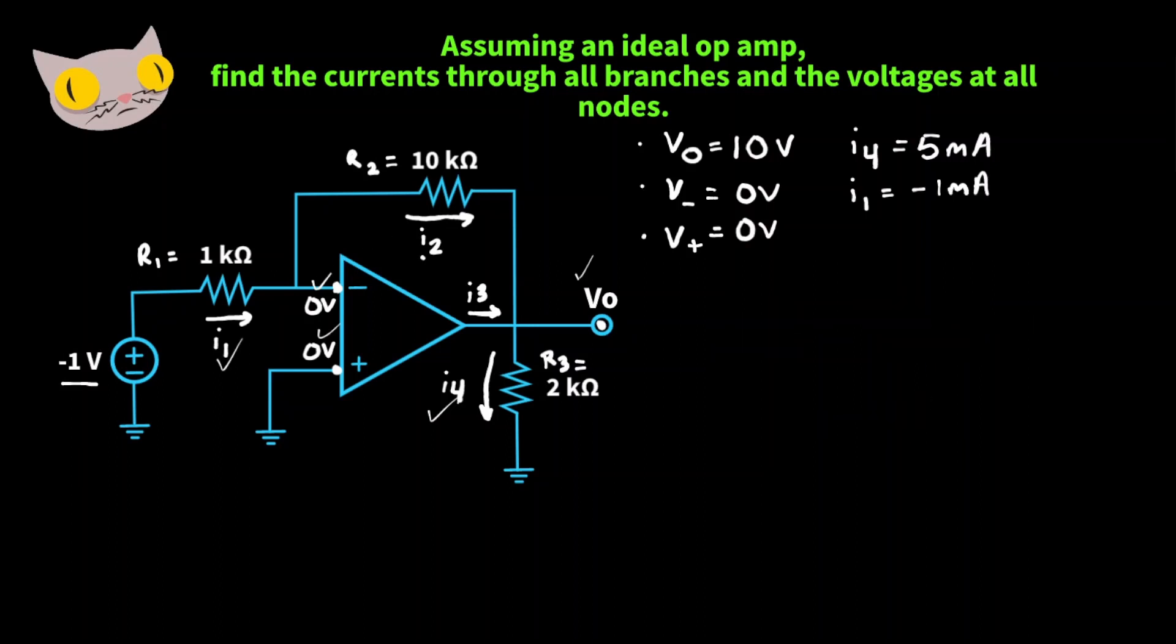Now let's find I2, the current that's running through R2, the 10k ohm resistor. That's going to equal 0 volts minus the output voltage, which is 10 volts, over R2, 10k ohms. And that's going to give us a I2 value of negative 1 milliamps.